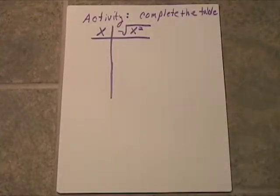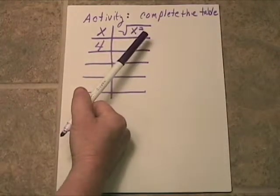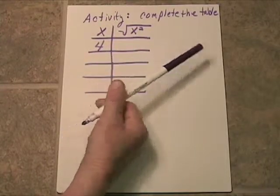Now we're going to take a look at square roots, the second part of today's lesson. We're going to begin by taking a look at a brief activity. I'd like you to fill in this table. Say x is 4. I'd like you to tell me, what's the square root of x squared?